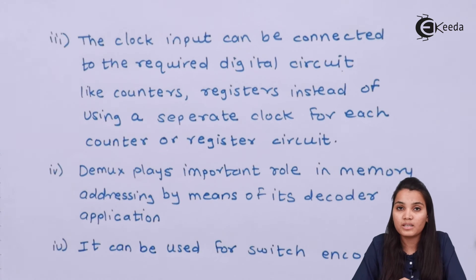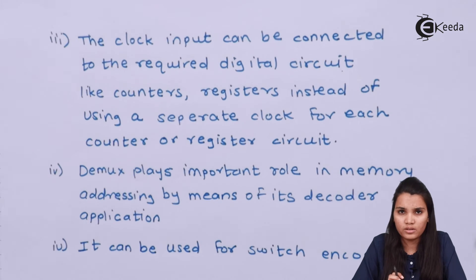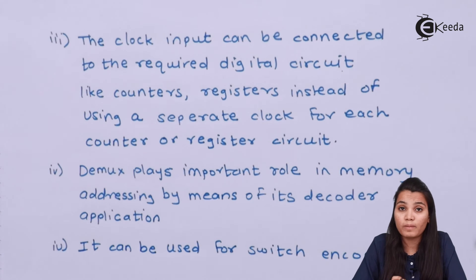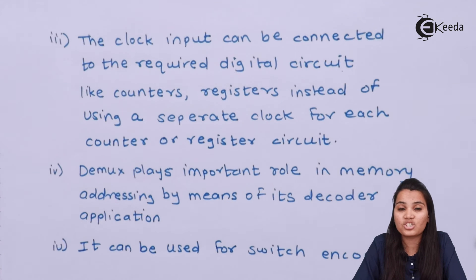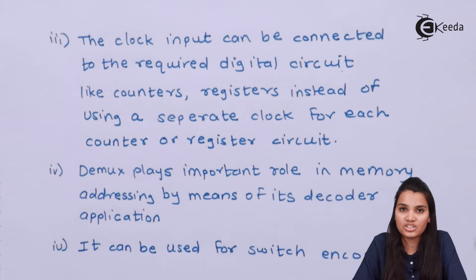What do we mean by switch encoding? Suppose there is a one-to-eight demultiplexer. By means of the select lines or control lines, you can easily switch between the outputs — depending on the inputs you give to the select lines, you can decide which output becomes active. This is the switch encoding application.